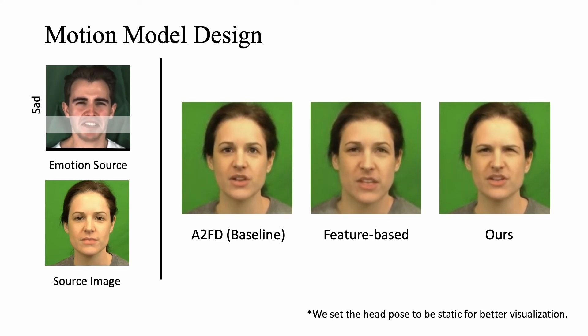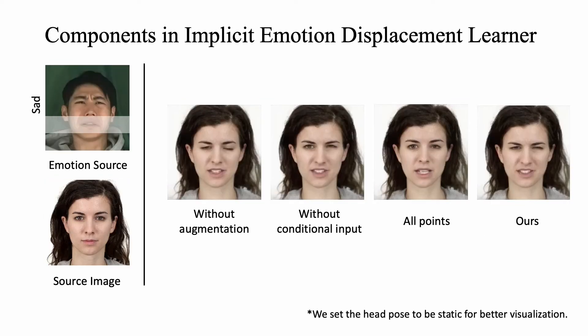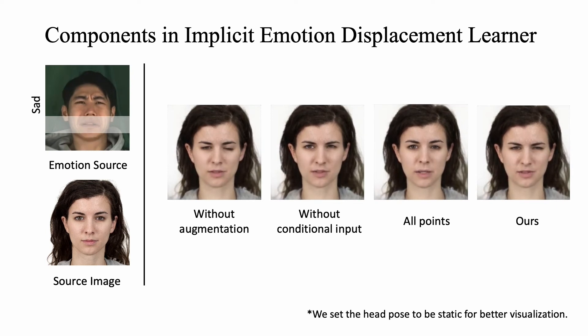It can be observed that the face shape produced by the feature-based model is unstable and the emotion is not obvious either, which indicates that emotion cannot be well disentangled at the feature space. We then verify the components in our implicit emotion displacement learner. All three components are effective designs for emotion generation. Among the three components, the data augmentation strategy is especially critical for our model as it contributes to transferring accurate emotional dynamics without sacrificing the identity.